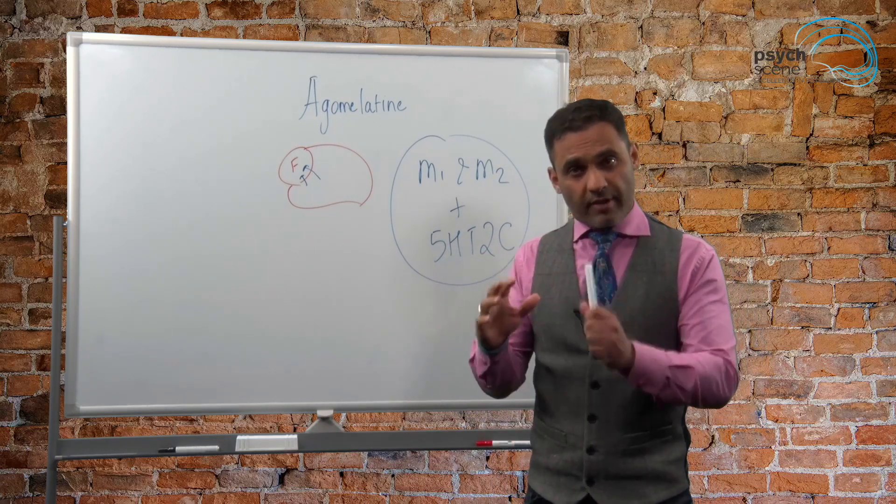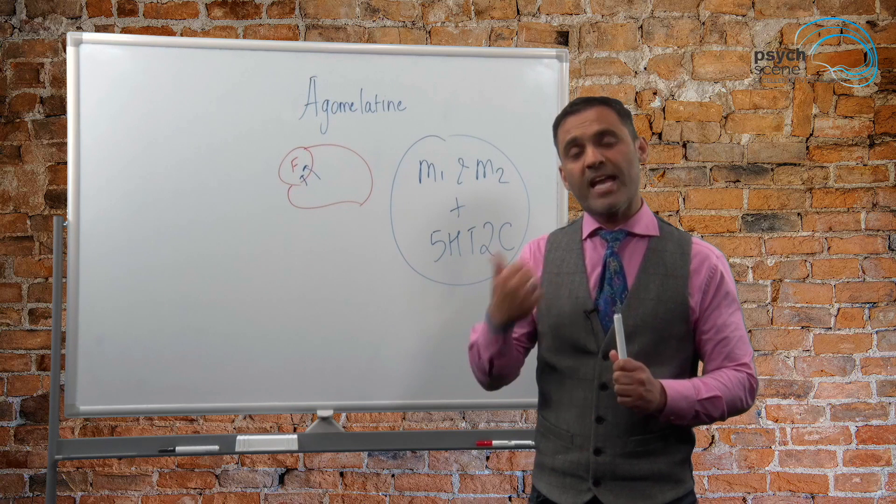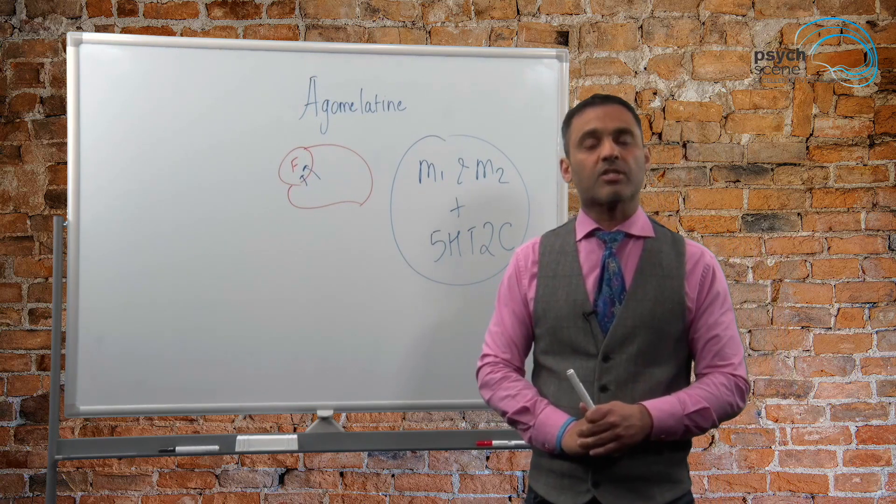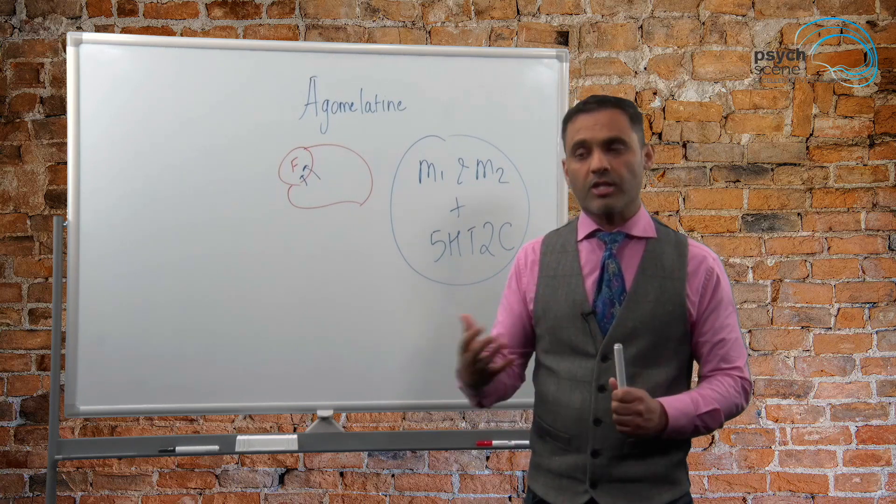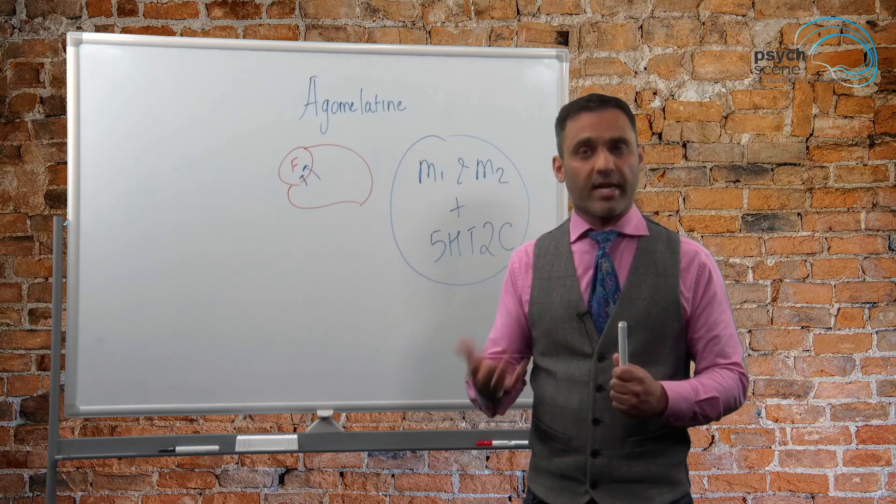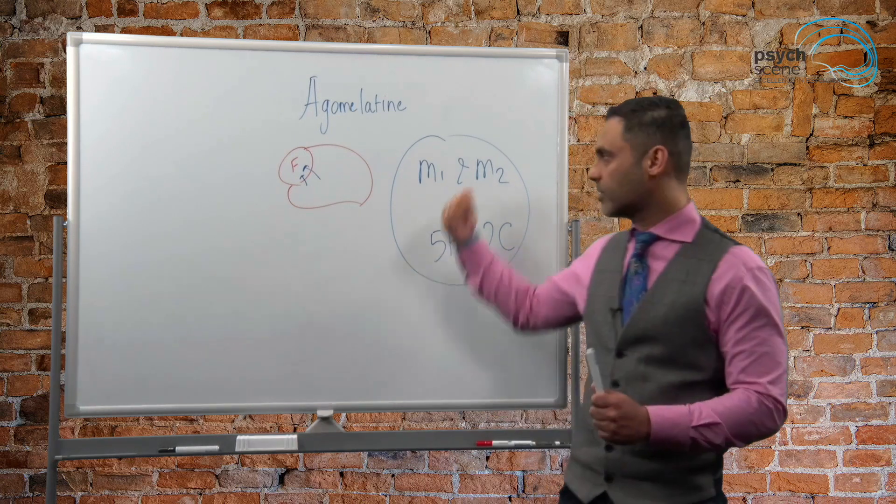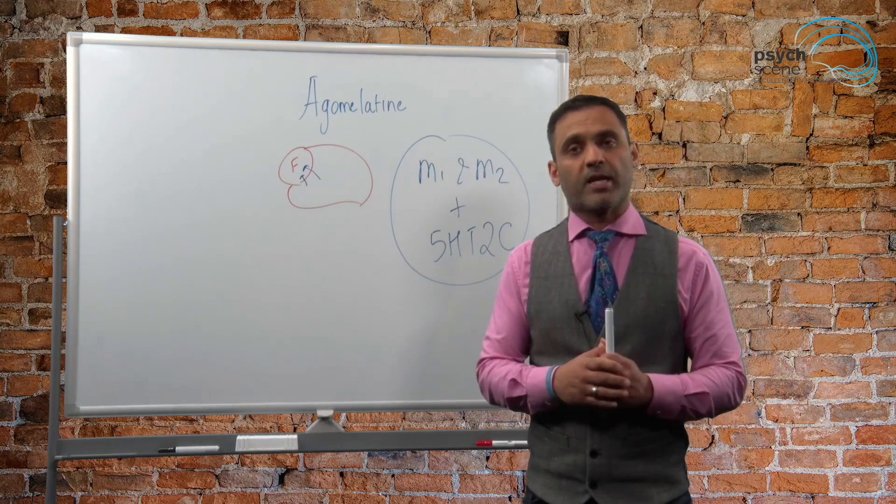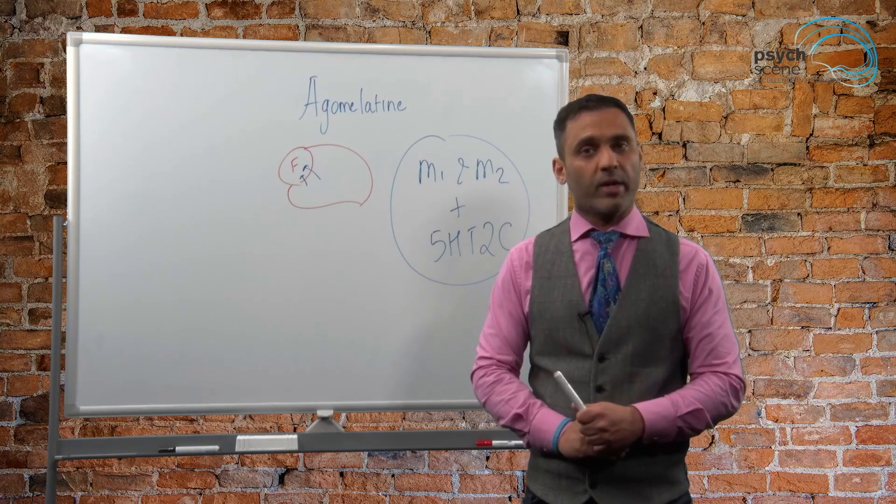In terms of its side effect profile, the main aspect that one has to look out for when prescribing agomelotine is to monitor liver function tests. So when you start off at 25 milligrams at night time, usually prescribed at night time because of this property to promote sleep, liver function tests should be carried out at 3, 6, 12 and 24 weeks.